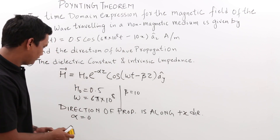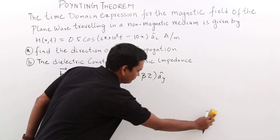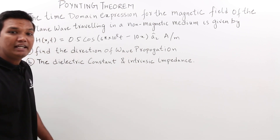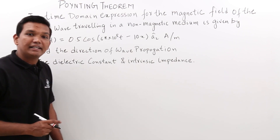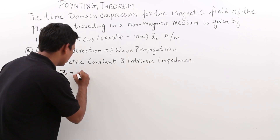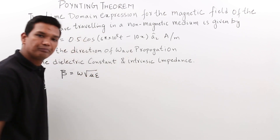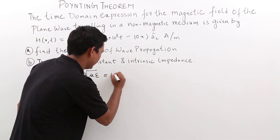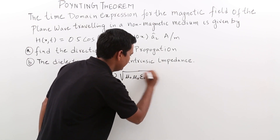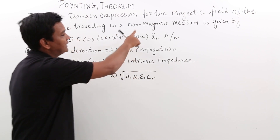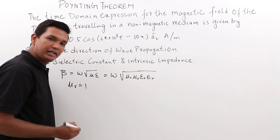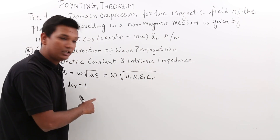Now for the second part: finding the dielectric constant. For a plane wave traveling in any medium, beta in a lossless medium is ω√(με) = ω√(μ₀μᵣε₀εᵣ). Since the question states a non-magnetic medium, μᵣ = 1. Substituting our value of ω = 6π × 10⁸, we get β = 6π × 10⁸ × √(μ₀ × εᵣ).